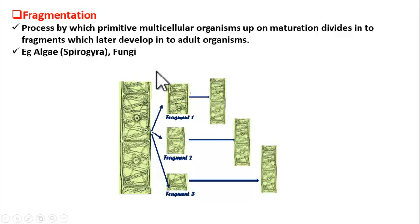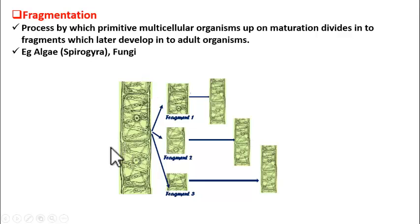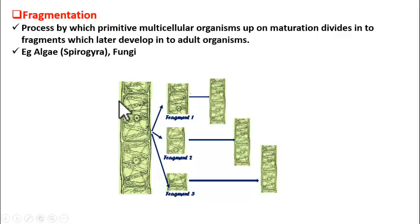This is seen in primitive multicellular organisms like algae and fungi. Here is the algae called Spirogyra. It is a filamentous algae made up of linearly arranged cells — one cell, another cell, another cell — arranged linearly to form a filamentous structure.